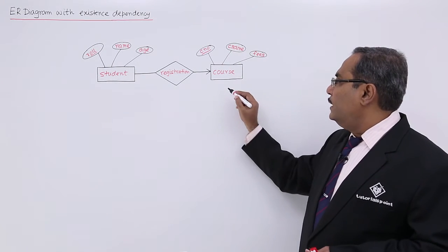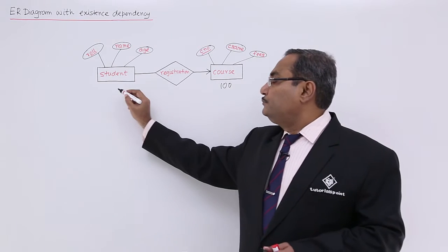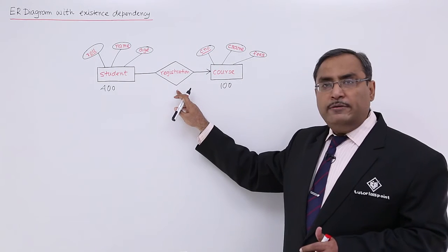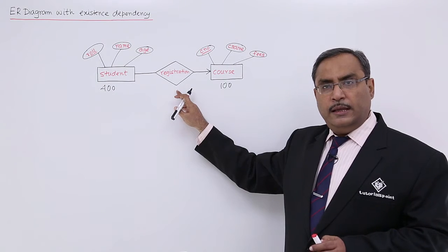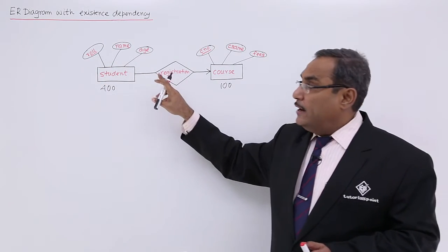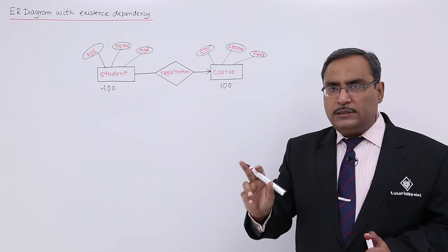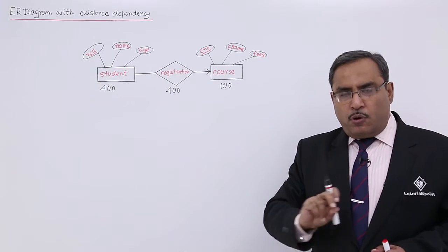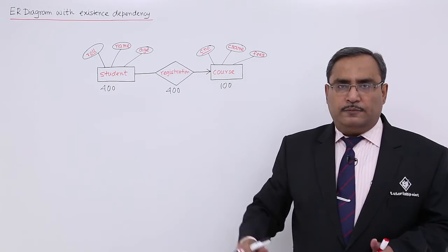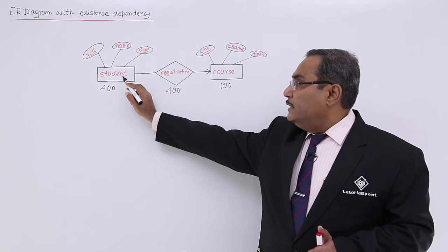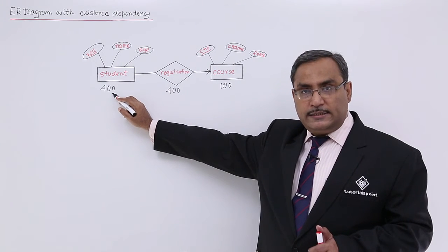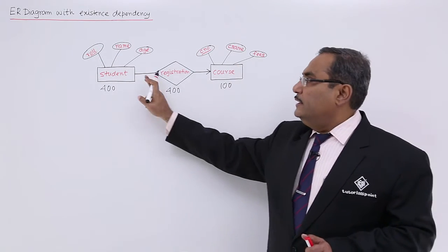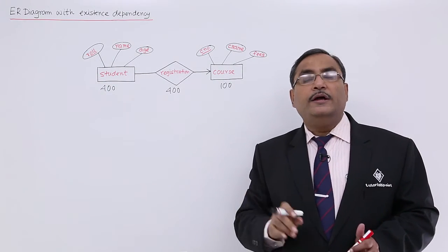Suppose this particular college has 100 courses and there are 400 students who have registered. How many records will there be under this registration table? Since each and every roll number will be coming at least once and all of them must be there, this registration will have 400 records — 400 relationships. The student entity set will have 400 entities, the course entity set will have 100 entities, and the 400 relationships will form the relationship set.